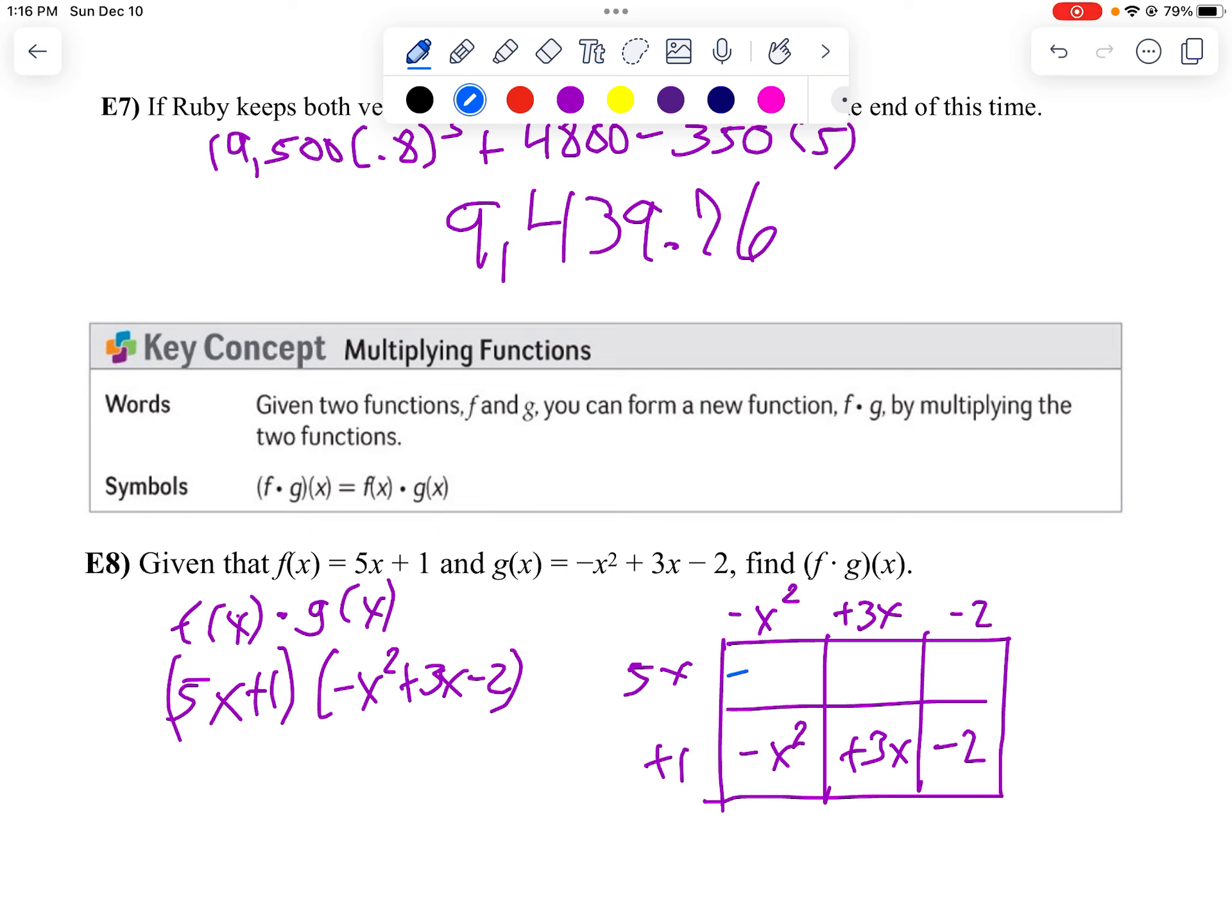And then I will multiply 5x times each of them. So I'm going to get negative 5x cubed and then plus 15x squared and then minus 10x. And then I'll look at my diagonals for my like terms. So negative x squared and 15x squared, negative 10x and 3x.